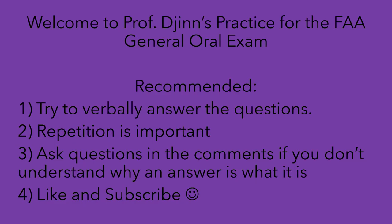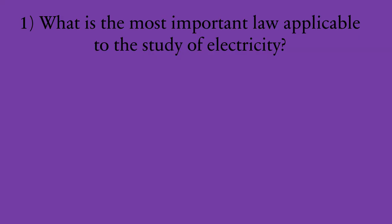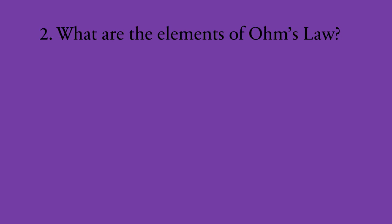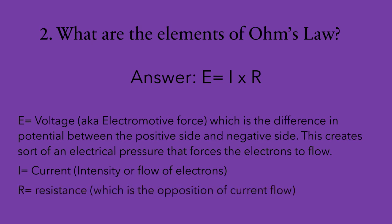Now let's get started. First section: basic electricity. Question number one: what is the most important law applicable to the study of electricity? The answer is Ohm's law, E equals IR. Number two: what are the elements of Ohm's law? The answer is E equals IR. E in this formula is the voltage, also known as the electromotive force. I is the current, or the intensity, or the flow of electrons. And R, of course, is the resistance.